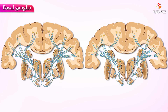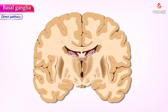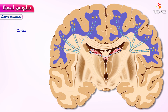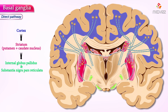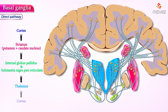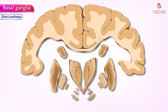From the striatum, the two main pathways of the basal ganglia arise — the direct and indirect pathways. The direct pathway begins in the cortex and follows this route: from the cortex, it travels to the striatum, then to the globus pallidus internus and substantia nigra pars reticulata, then to the thalamus, and eventually back to the cortex. This loop is excitatory, meaning it promotes movement.